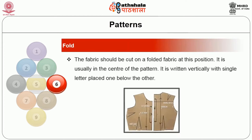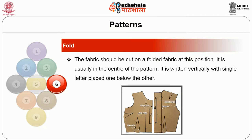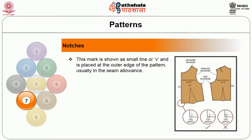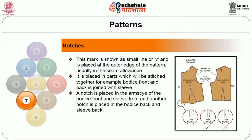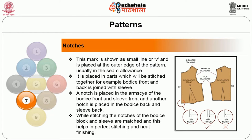Another detail is 'on fold', which indicates the fabric should be cut on a fold at that position, usually at the center of the pattern, written vertically with single letters placed one below the other. Notches are another detail, shown as small lines or V-marks placed at the outer edge of the pattern in the seam allowance. They are placed in parts that will be stitched together — for example, a notch is placed at the armscye of the body's front and sleeve front, and another at the body's back and sleeve back. While stitching, matching the notches ensures perfect stitching and neat finishing.